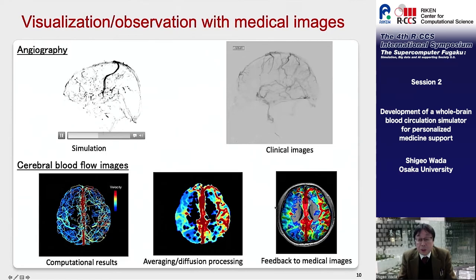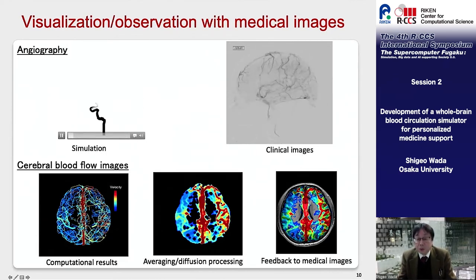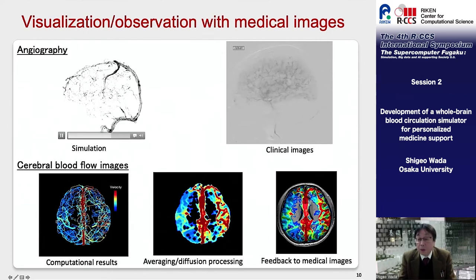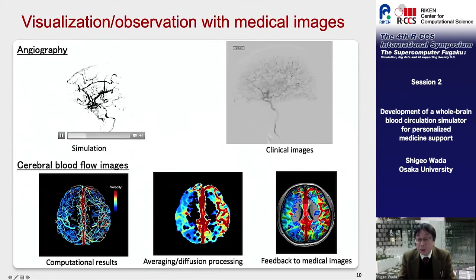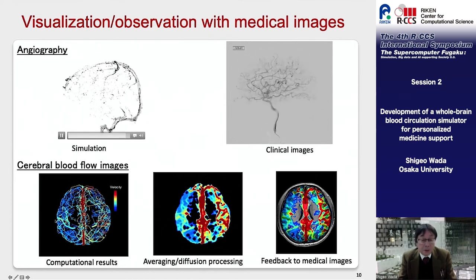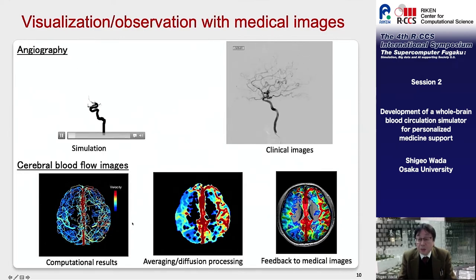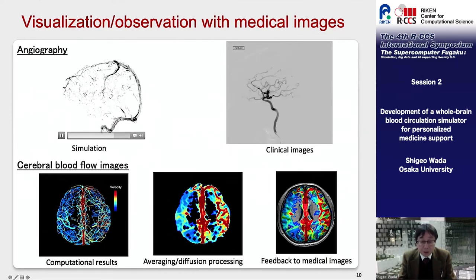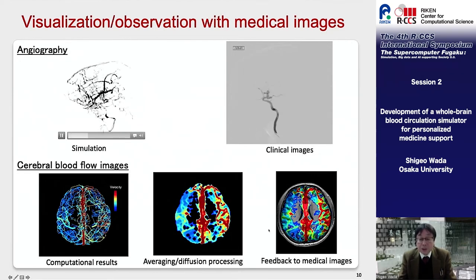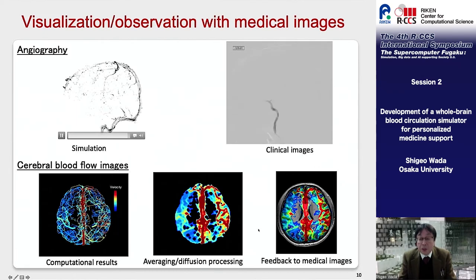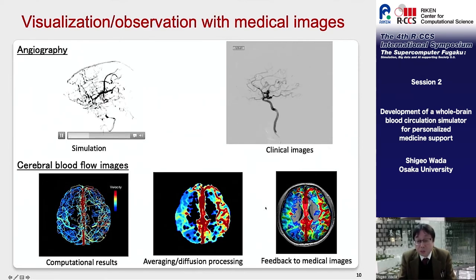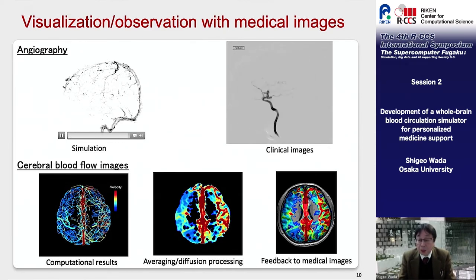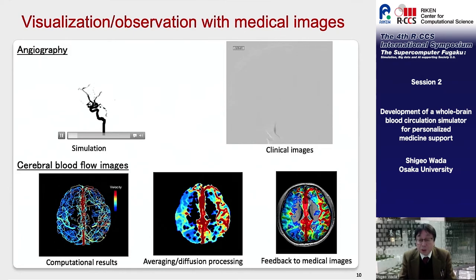The figure shows the blood flow distribution when the left middle cerebral artery is occluded. By lowering the resolution, it is possible to create a medical image as obtained by blood flow scintigraphy. We are still in the stage of simulation based on a virtual cerebrovascular model, but we are conducting research so that actual blood flow phenomena in the brain can be reproduced by matching with the medical images of individual patients.